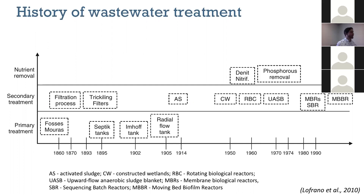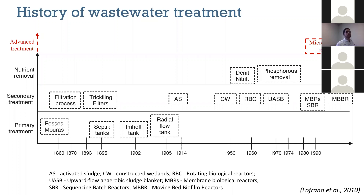Most of the technical developments in wastewater treatment really happened in the last 200 years. About 200 years ago, the main reason for treatment was to get rid of solids — the so-called primary treatment — followed by secondary treatment, especially biofilters. The first biofilter in the US was installed in 1901 in Madison, Wisconsin. More recently, within the last 50 to 60 years, we became aware of the requirement to remove nutrients, mostly due to eutrophication of surface waters and fish die-offs from algae growth.